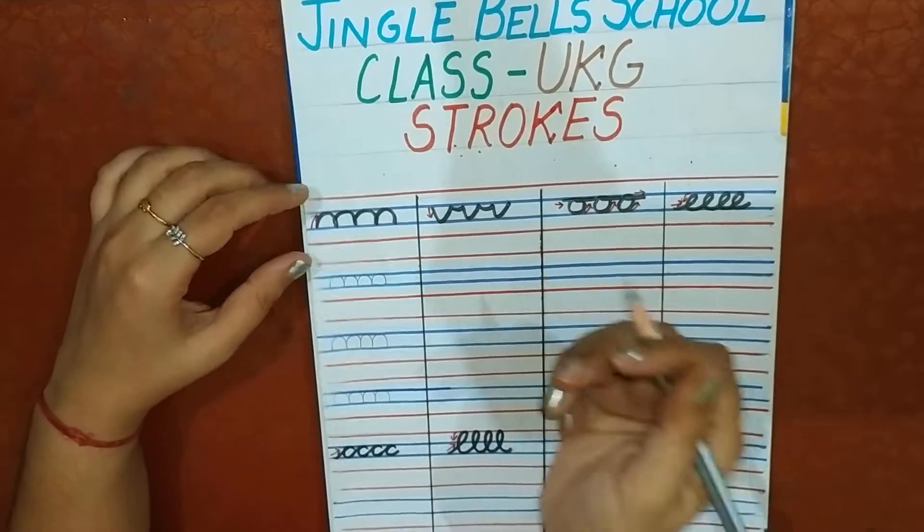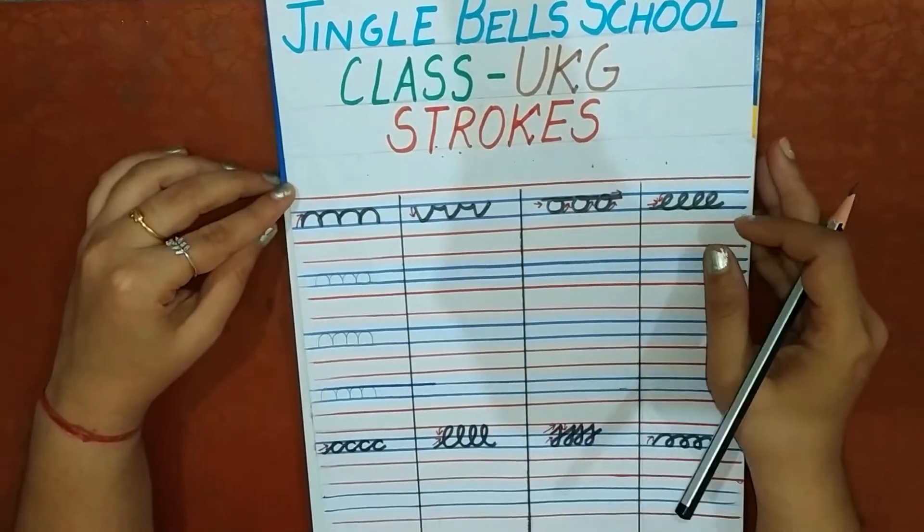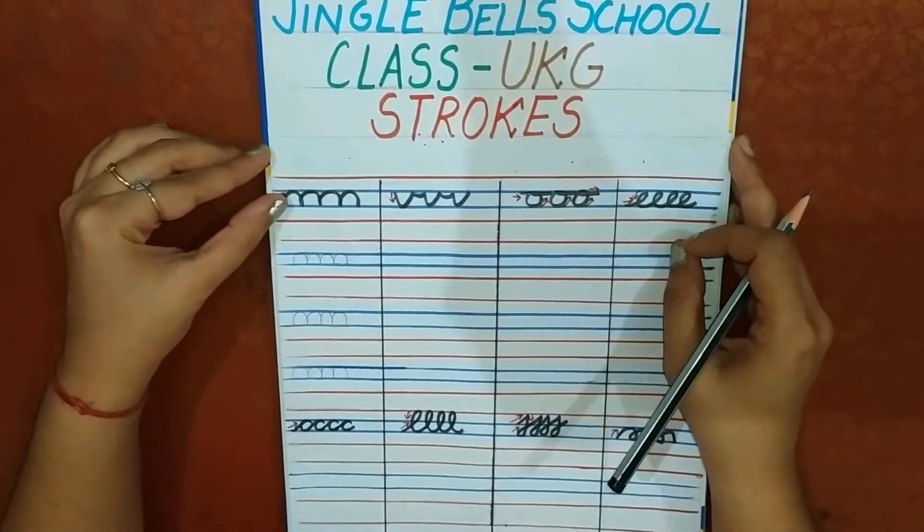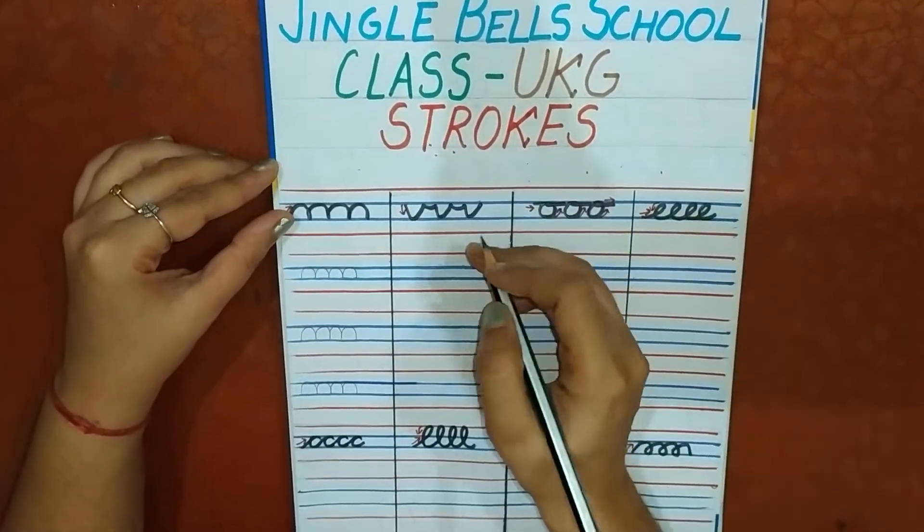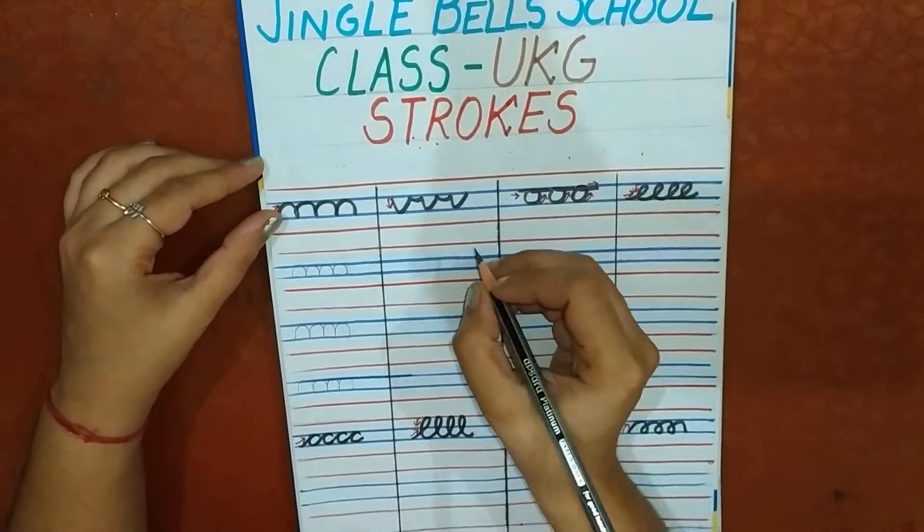This is the downward open curve. Now, come to the next stroke.